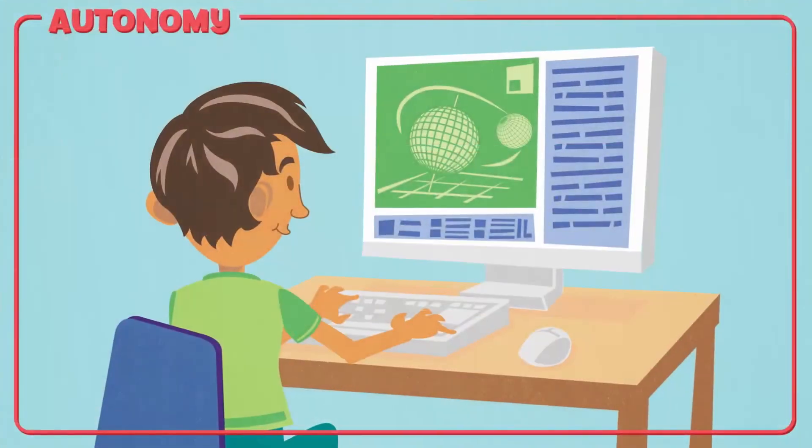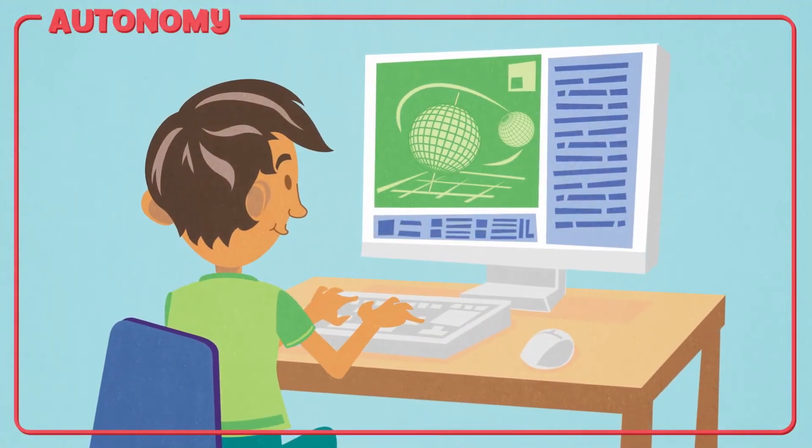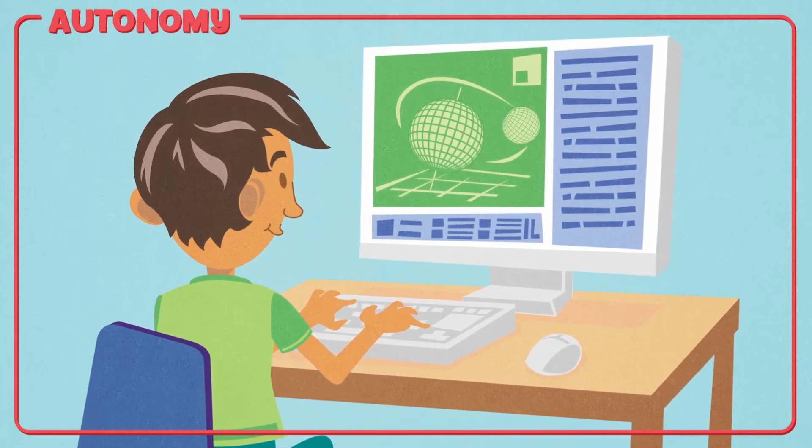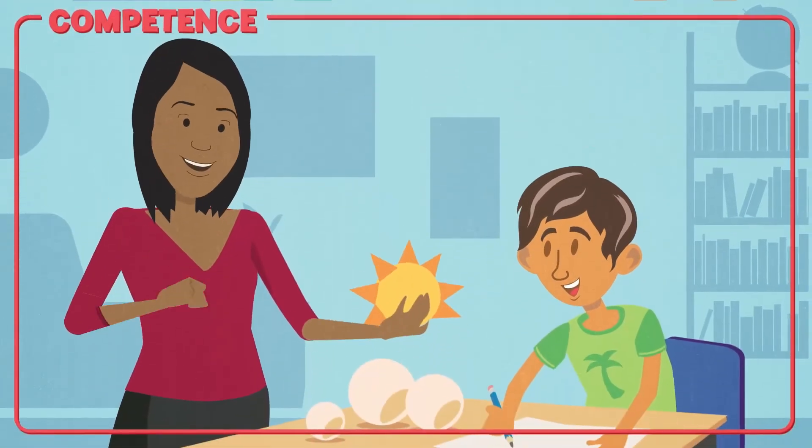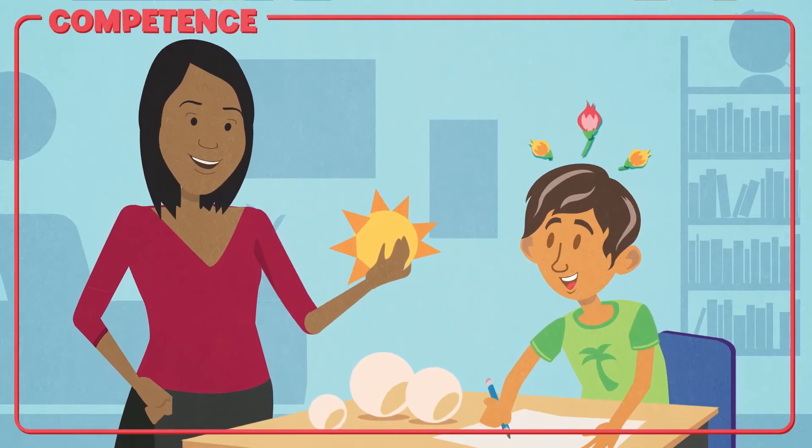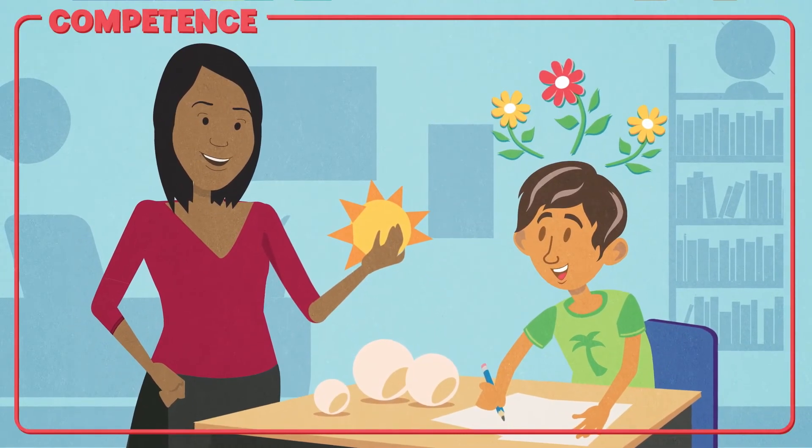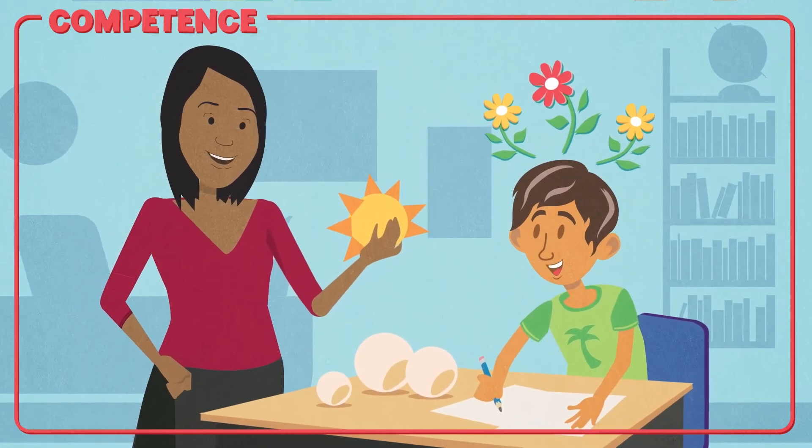The first need is autonomy or choice. Give Parker options for how to explore key concepts and demonstrate her knowledge. The second is competence. Give Parker the tools to exercise a growth mindset as she takes on the task and help her understand why the skills she's building are so important.